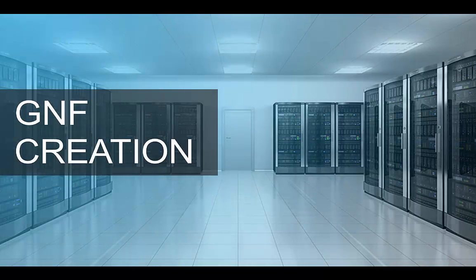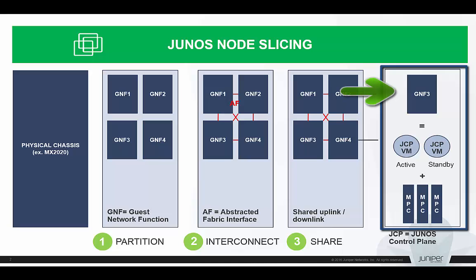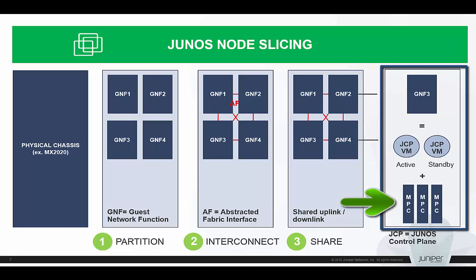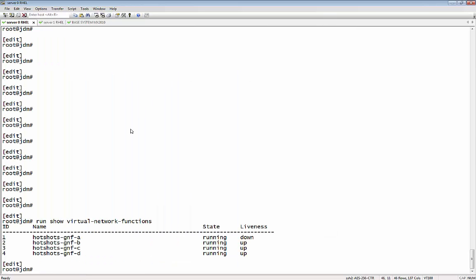This is the Junos node slicing demo. The first thing we're going to showcase here is GNF creation. For those of you that don't know what a GNF is, it is equivalent to one or two Junos control plane instances on VMs. You can look at these as external REs on a server and the corresponding NPCs or line cards.